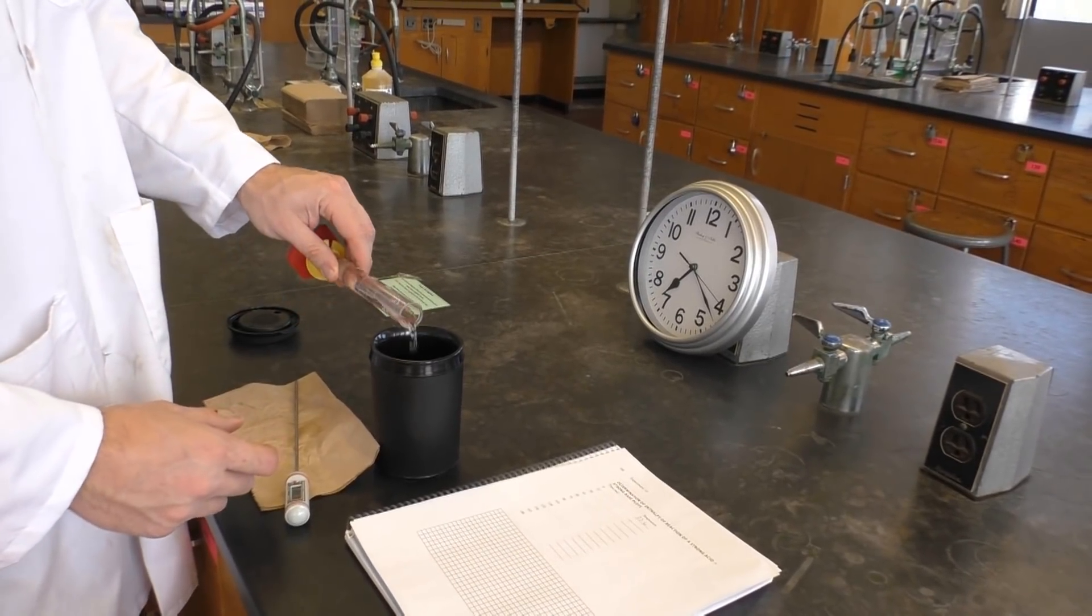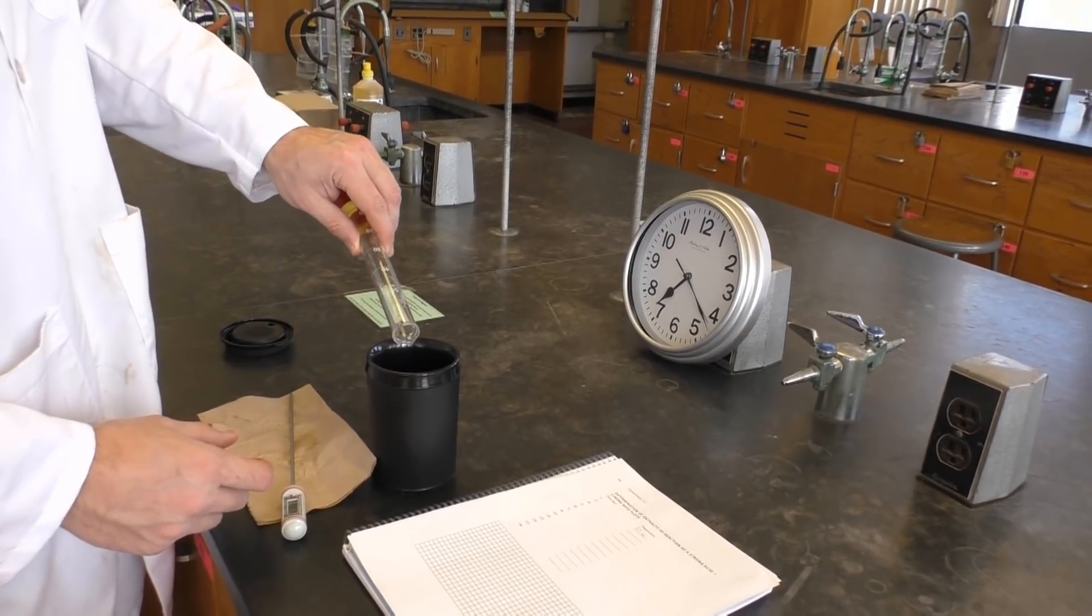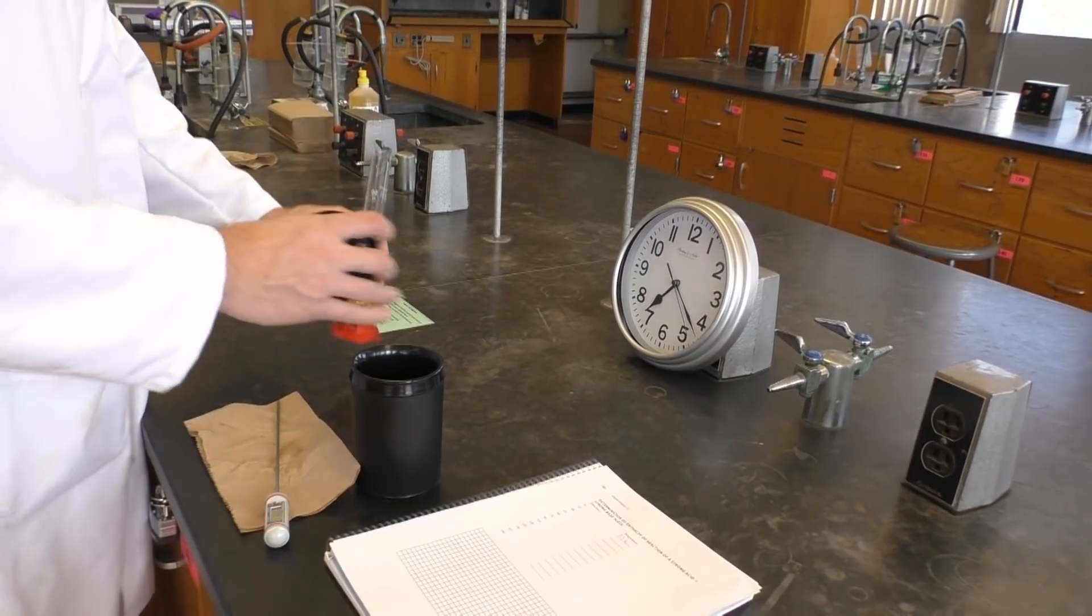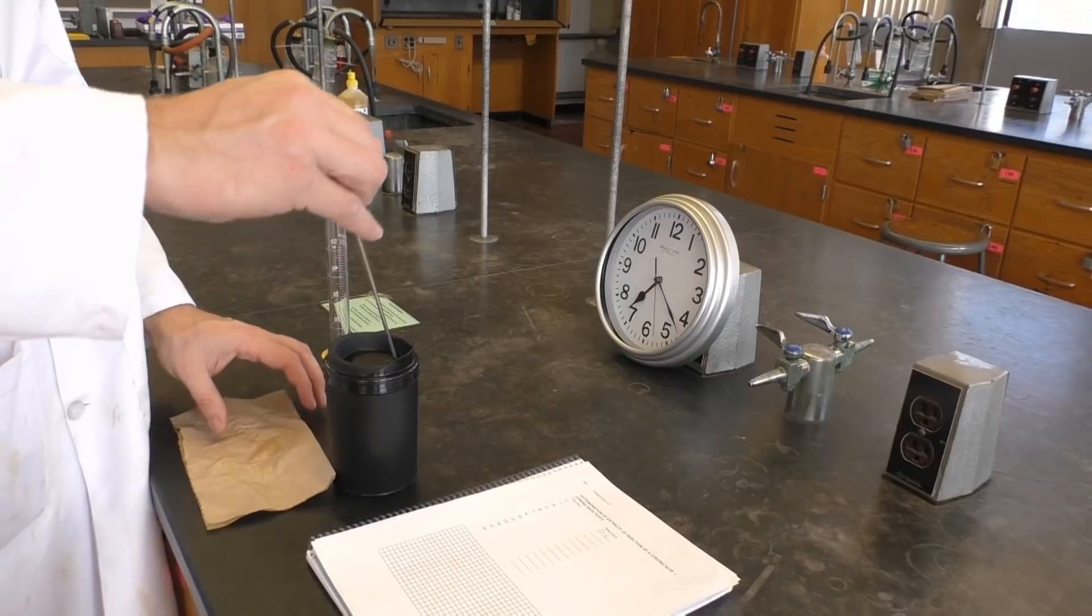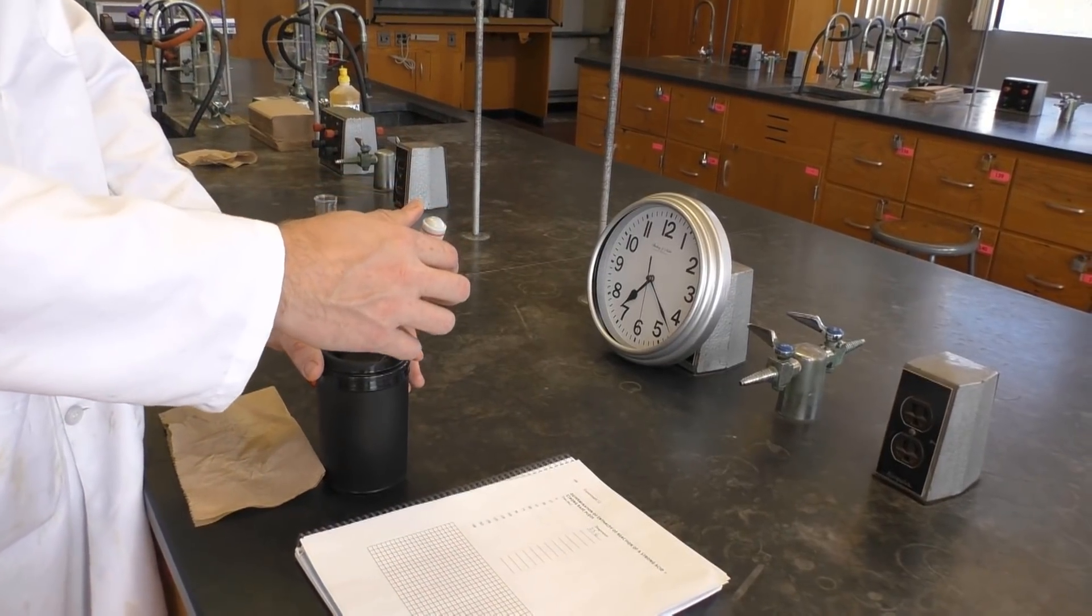Now, just like before, quickly add your acid all at once to your calorimeter. Cover, swirl, and record the temperature every 15 seconds for 3 minutes.